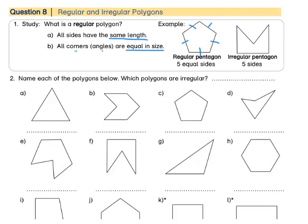If we look at this shape, remember we name our polygons according to their number of sides. So let's count the sides: 1, 2, 3, 4, 5. We know that a shape with 5 straight sides is called a pentagon.